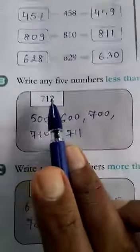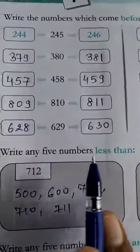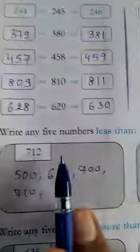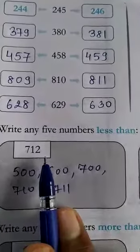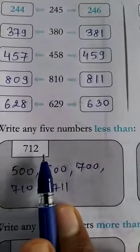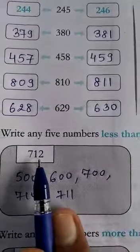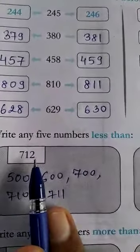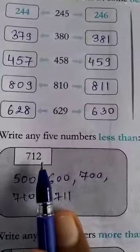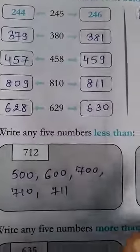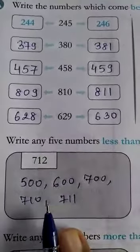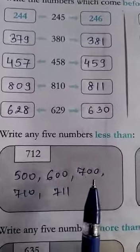Now, question number B. Write any 5 numbers less than 712. Any 5 numbers. There are total 711 numbers which is less than 712. You have to write any 5. Your answer may be different from this answer.